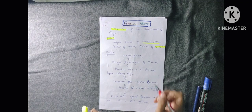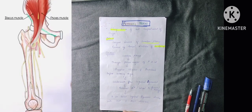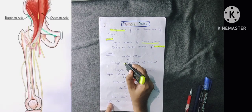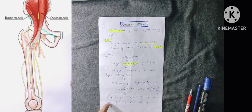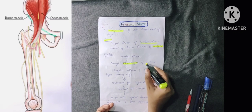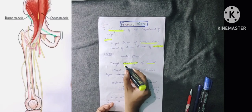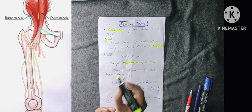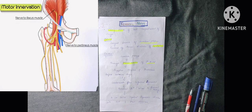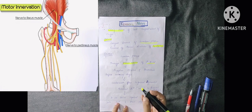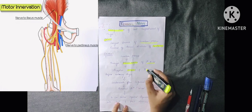Coming to the course: it originates from the lumbar plexus, then passes through the psoas major muscle in the posterior abdominal wall. Before entering into the thigh, it supplies two muscles — the iliacus and the pectineus.